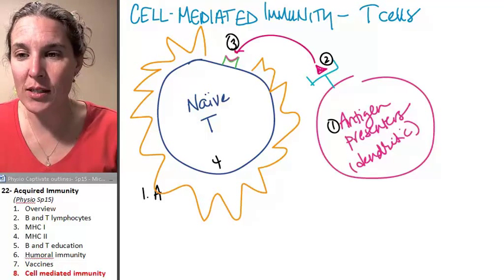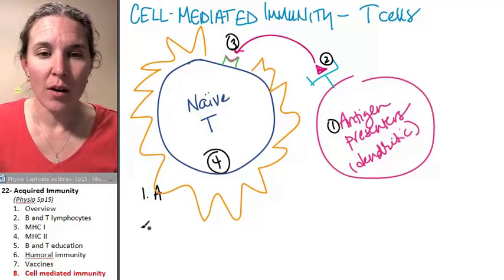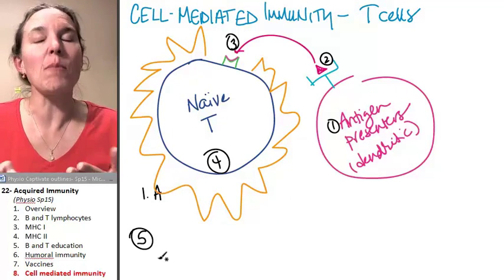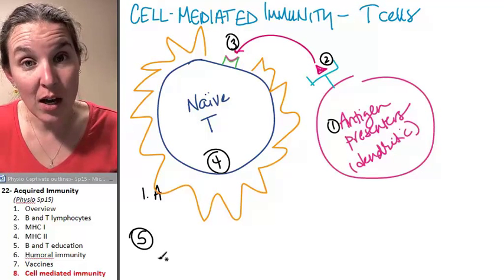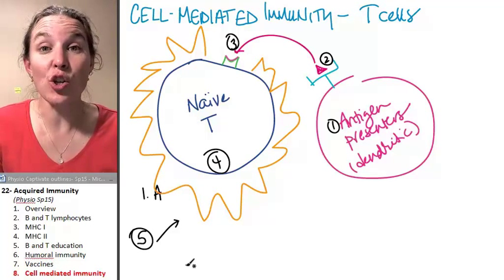So there's only four steps here, not five, before you get activated. Now, you've been activated. There are multiple different flavors of naive T cells. So depending on what flavor of naive T cell you were,